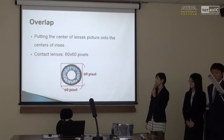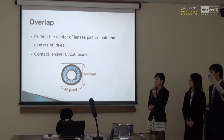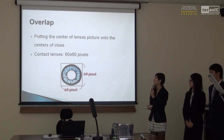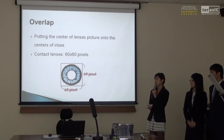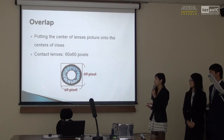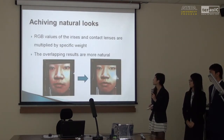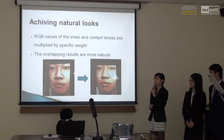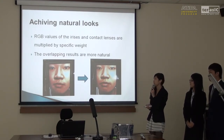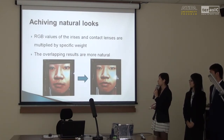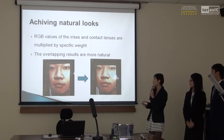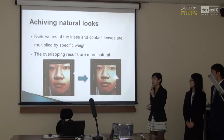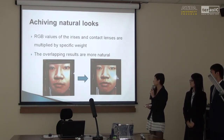After knowing the location of the iris center, we overlap the contact lenses on the user's irises. We store those images in the SD card, which is large and flexible enough to store those images. Each image of a contact lens is 60 by 60 pixels. To achieve a more natural look, we multiply the RGB values of the contact lenses and irises in a specific way. The picture on the left is the result before multiplication, and the picture next to it is the result after multiplication — you can see the look is more natural.